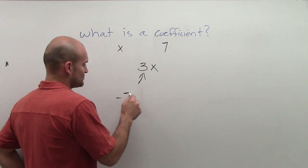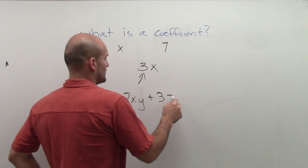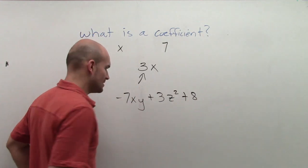So let's say, let's just write out something. Let's say negative 7xy plus 3z squared plus 8, all right?